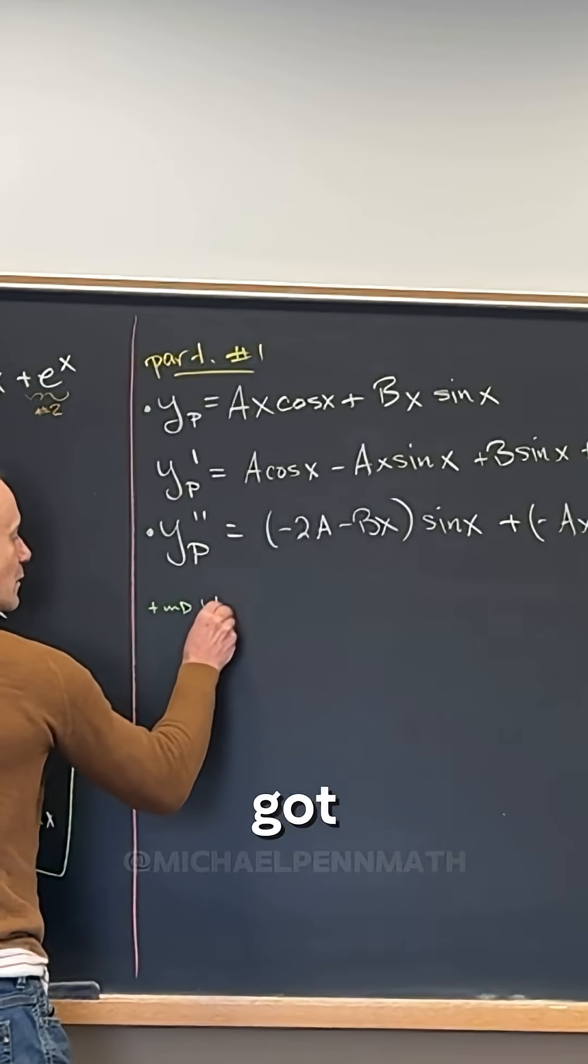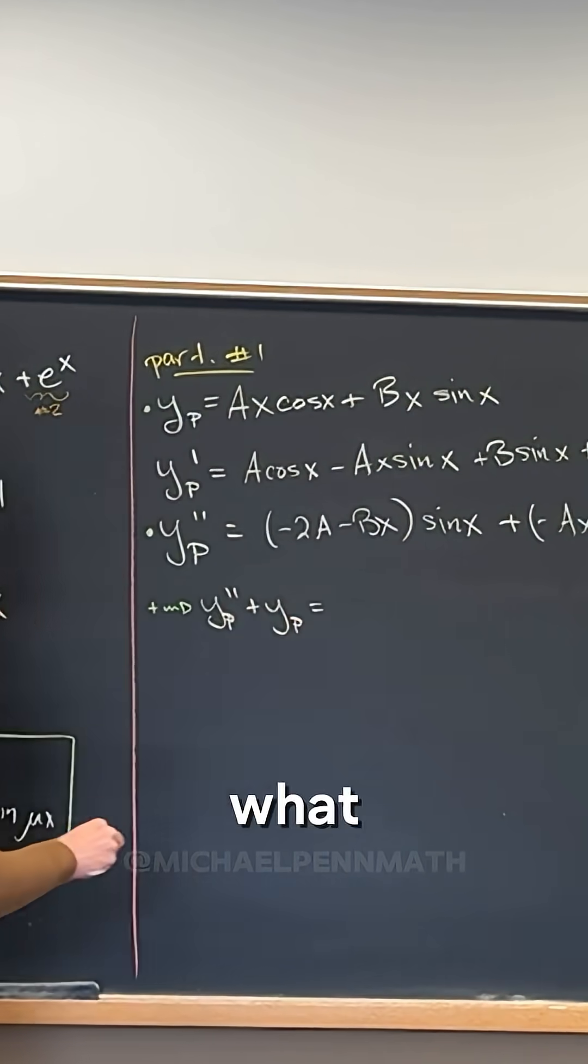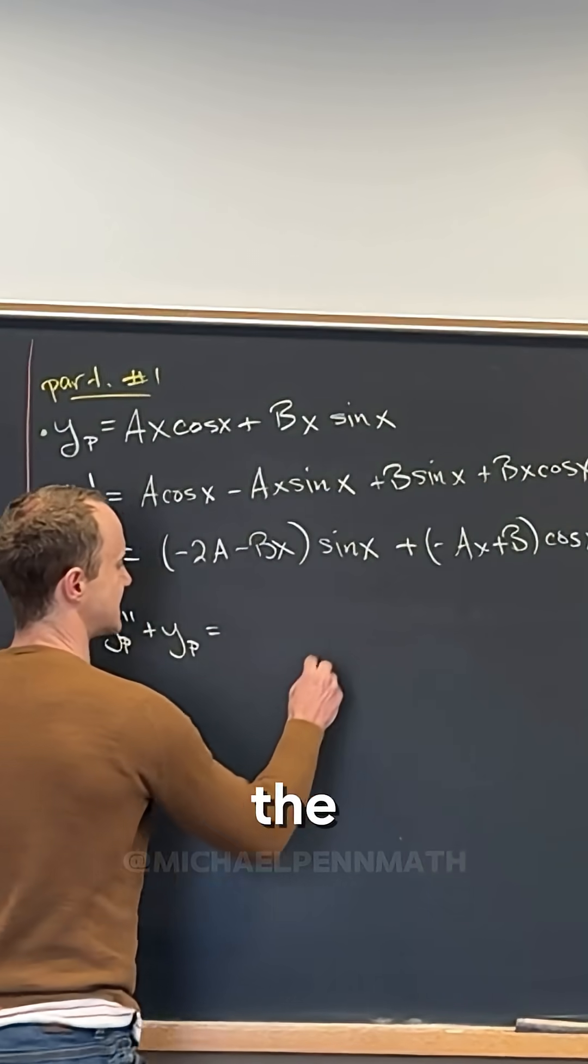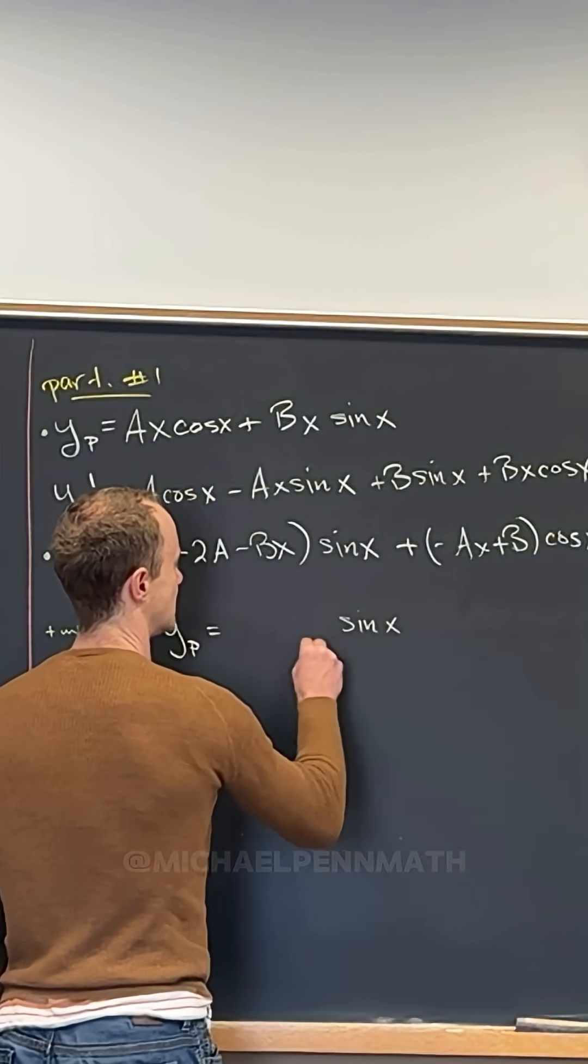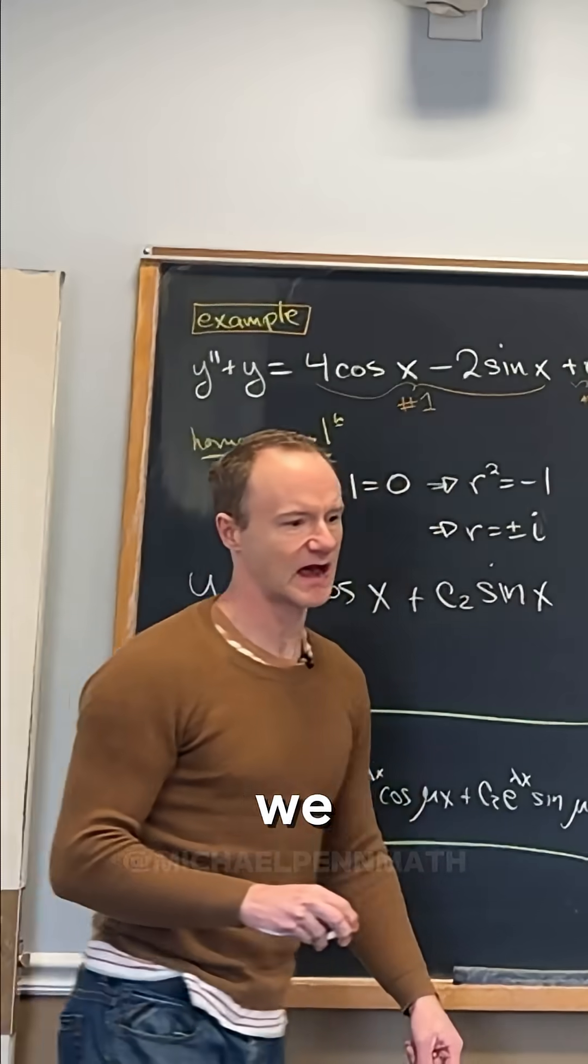We've got yp double prime plus yp is what? Can we do this a little bit carefully? What happens if we just collect the sine parts? If we look at the sine part here and the sine part here, what do we get when we add those together?